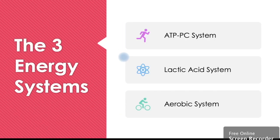So the three energy systems, they all help produce this ATP, the body's energy. We have number one, the ATP PC system. The second is our lactic acid system. And the third is our aerobic system.